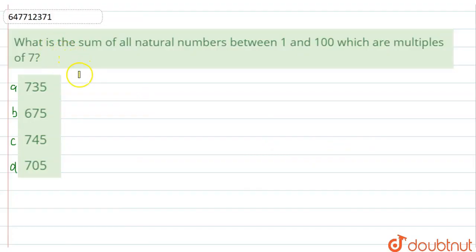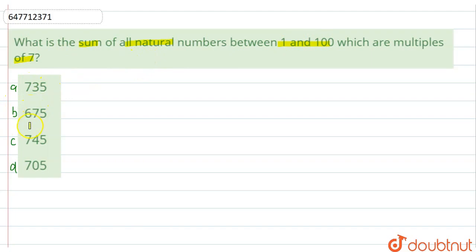Hi everyone! Let us have a look at the question first. The question is: what is the sum of all natural numbers between 1 and 100 which are multiples of 7? 1 से 100 तक के बीच के जितने भी natural numbers जो की 7 के multiples हैं उनका sum निकालना है. Option A है 735, B है 675, C है 745 और D है 705.